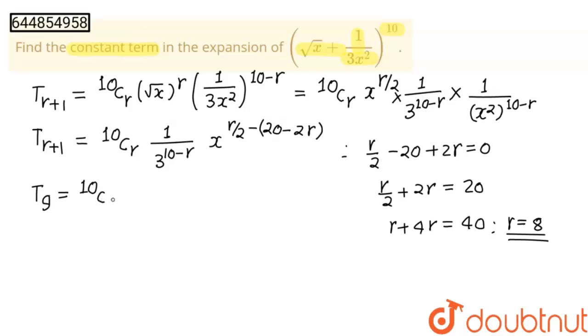10C8 into 1 upon 10 minus 8 will be 2, 3 square that is 9 and this will be x to the power 0. And 10C8 will be 10 into 9 into 8 factorial upon 2 into 8 factorial into 1 upon 9. This 9 will get cancelled out, 8 factorial, 8 factorial will get cancelled out, 2 will cancel 10 in 5 times. So constant term is 5 and the term number is 9.